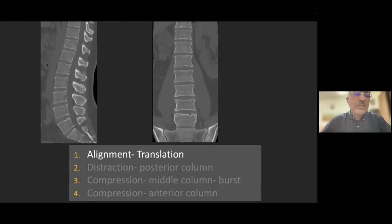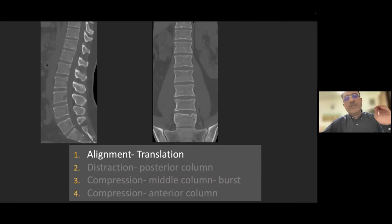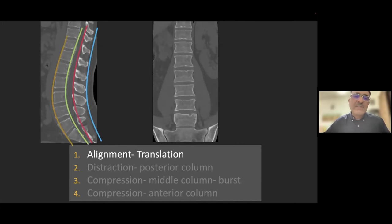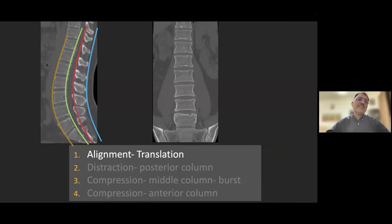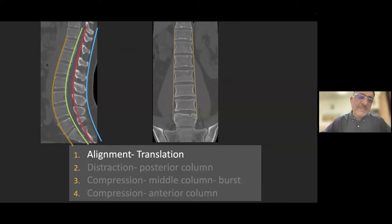First, we look for alignment to diagnose type C translation injury in AO classification. On sagittal images, we look for four smooth curved arc-type lines: the anterior vertebral line, the posterior vertebral line (green), the spinal laminar line (red), and the interspinous line — very similar to what we assess in the cervical spine. On coronal images, we look at the lateral vertebral line connecting the lateral parts of the vertebral bodies, which helps determine whether there is translation in the coronal plane.